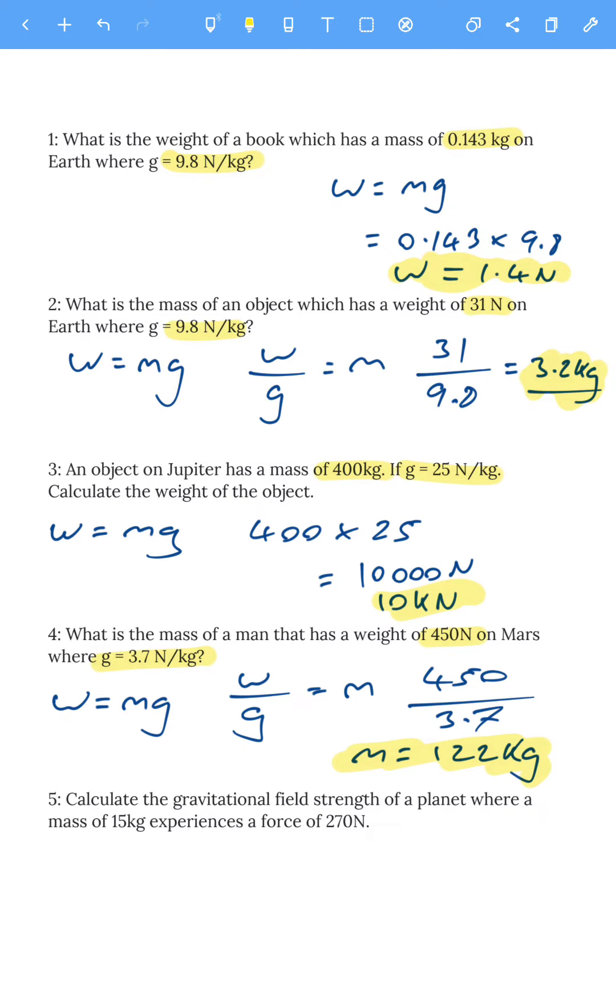Last one. Calculate the gravitational field strength of a planet where a mass of 15 kilograms experiences a force of 270 newtons. Again, it's W = mg, and this time we rearrange to find g by getting rid of the times m by dividing by m. So 270 divided by 15 gives a gravitational field strength of 18 newtons per kilogram, or 18 meters per second squared.